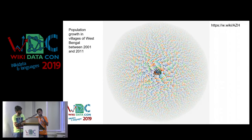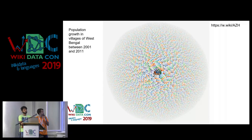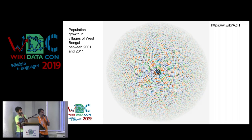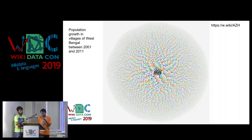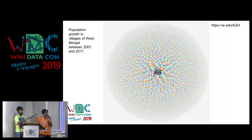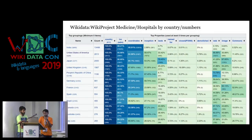We also tried to create cool visualizations from the work we have done, because census data is boring — it's not paintings or GLAM data. So we need to find some way to make it interesting for people. This is the population growth in West Bengal between villages — around 36,000 villages — between 2001 and 2011. And not only villages, we have uploaded census data about every administrative hierarchy: community development blocks, districts, municipalities, wards, cities, and towns.